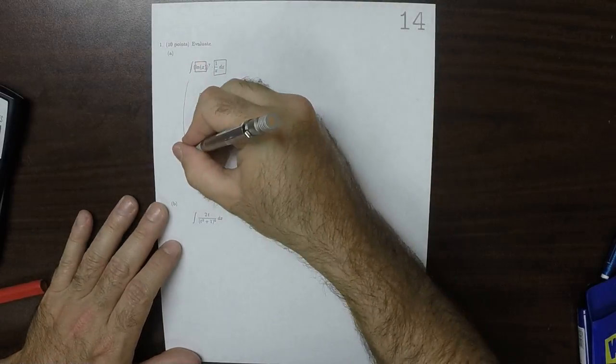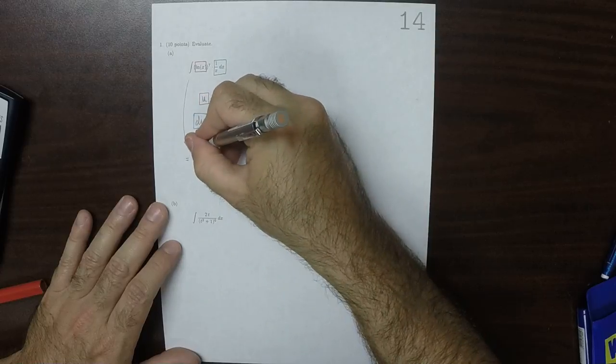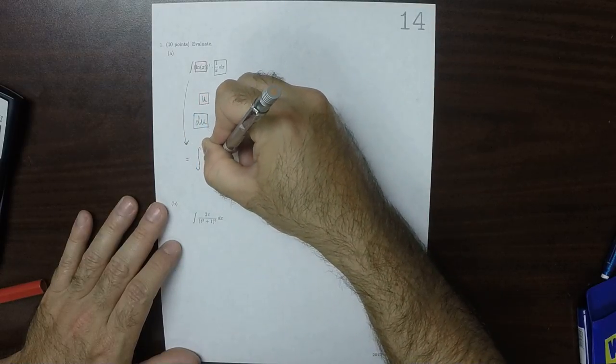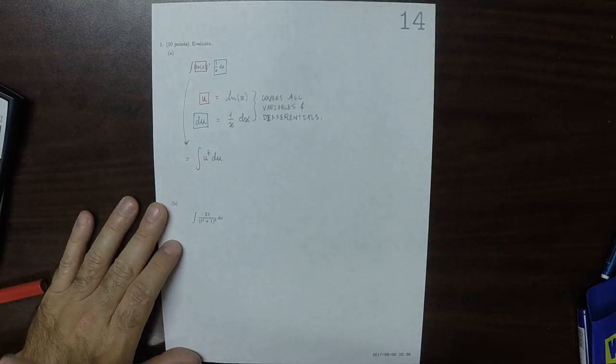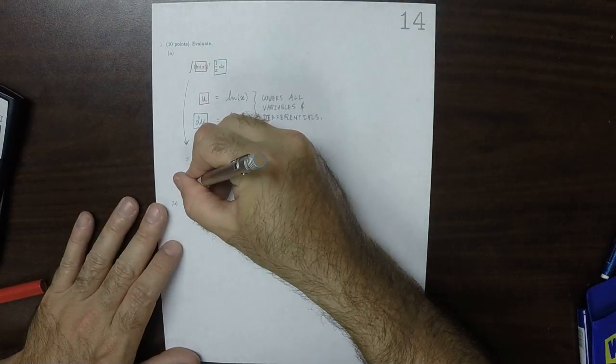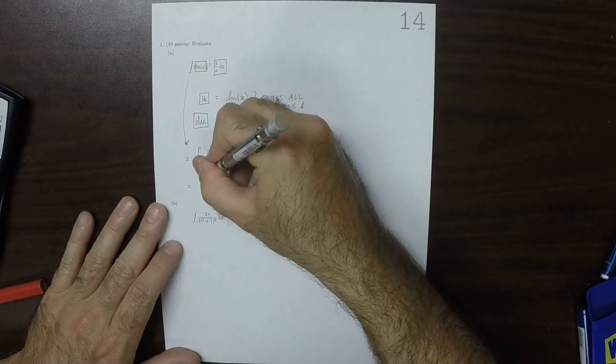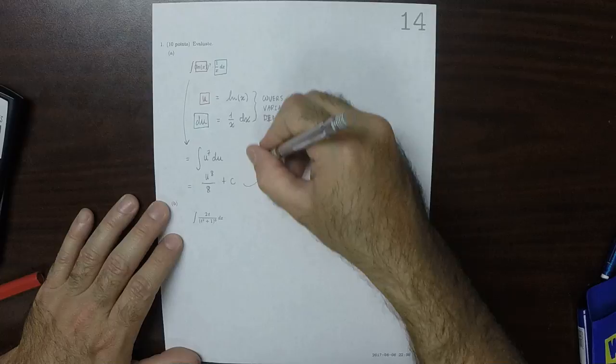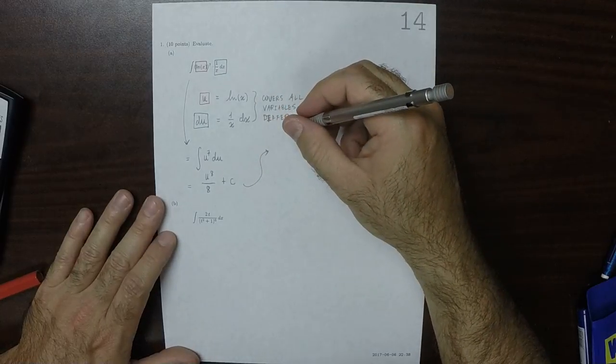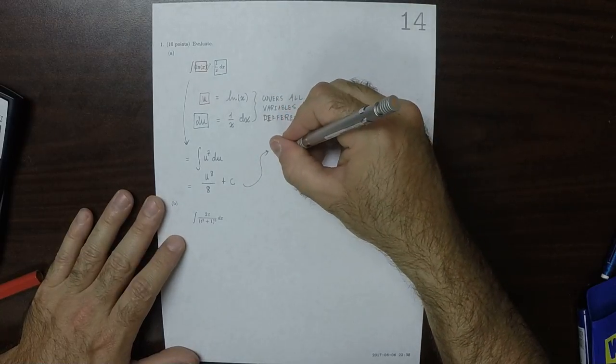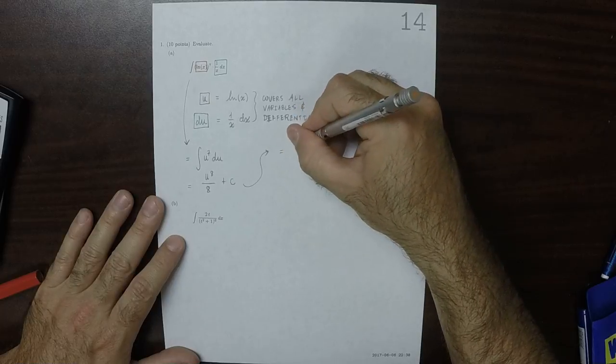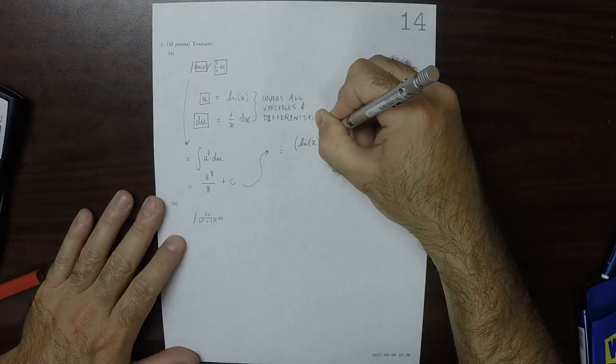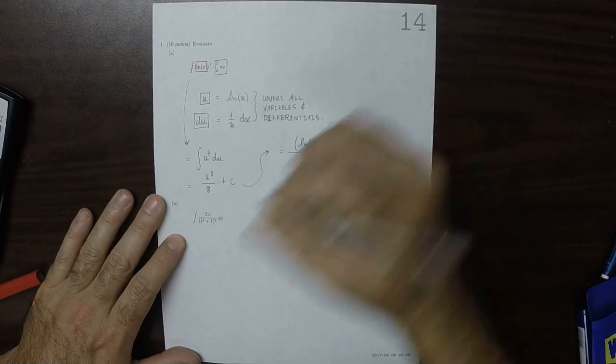So as a result, the new antiderivative is antiderivative of u to 7 du, which thankfully is one of the antiderivatives you know. So this would be u to 8 over 8 and then plus some constant, and then taking it back in terms of x, the answer is natural log of x to exponent 8 divided by 8 plus a constant.